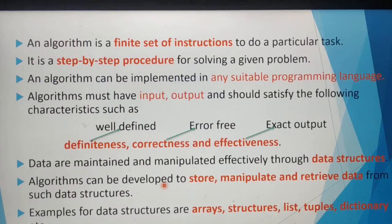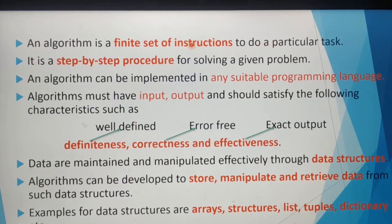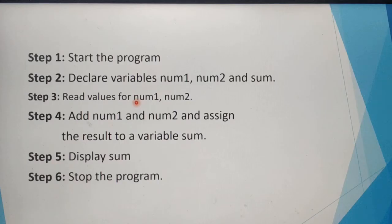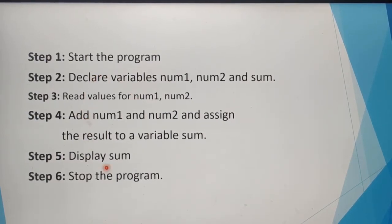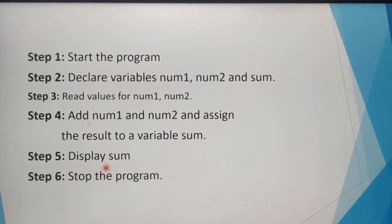Next, let's see what is an algorithm. An algorithm is a finite set of instructions to do a particular task. For example, for addition of two numbers, we need two input values — num1 and num2 — which produce an output called sum.